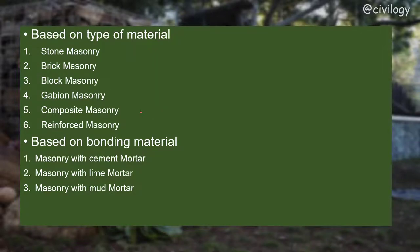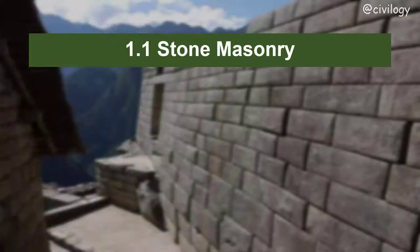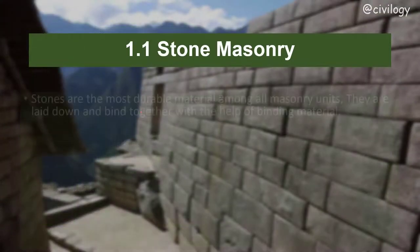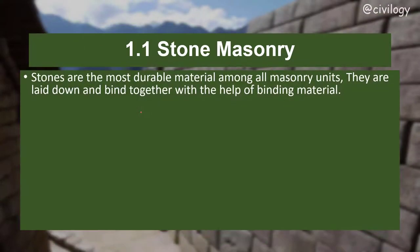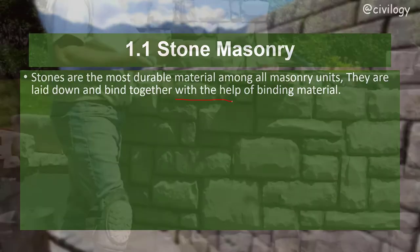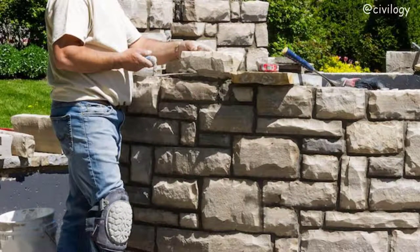What is stone masonry? Stones are the most durable material among all masonry units. They are laid down and bound together with the help of binding materials. These stones are rarely affected by environmental factors and are not susceptible to fire, corrosion, wind, or heat.